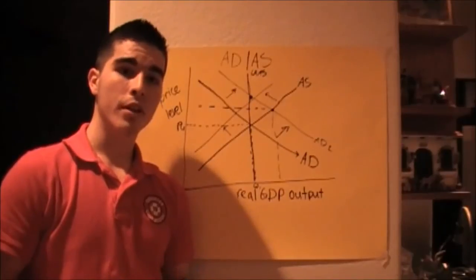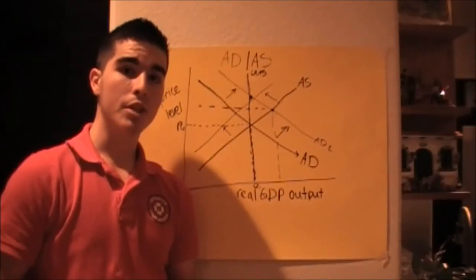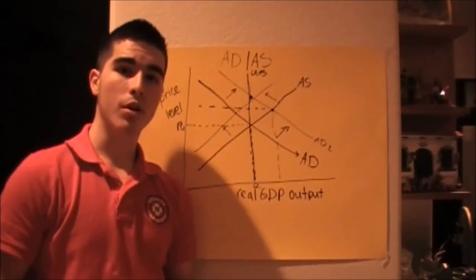The opposite, fiscal contractionary policy, would be to lower government spending, increase taxes, and this would be to get us out of an inflationary period.